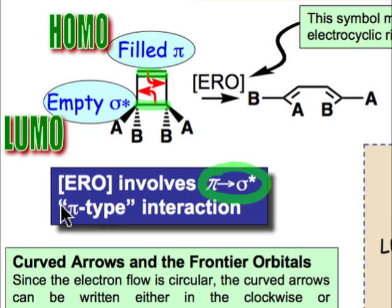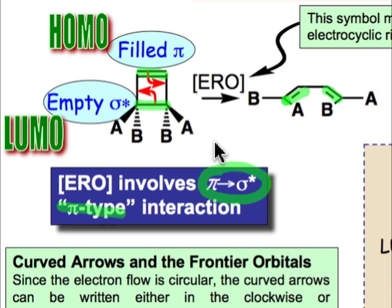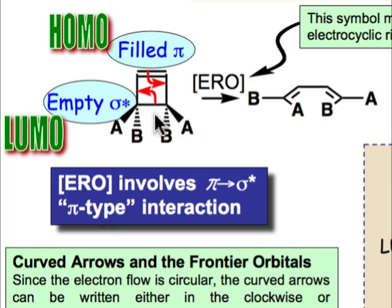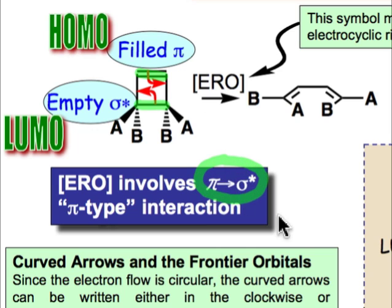It may not be obvious now, but the interaction is a π-type interaction, as hopefully you'll see. You can kind of recognize that already, because if you look at the product, you'll see that π bonds are formed where those curved arrows end up. It would have been possible to reach the same conclusion had we chosen to dissect this molecule the other way — focusing on the source of electrons as being the σ electrons donating into π*. But let's take a look at the frontier orbitals for the case I described: π donating into σ*.